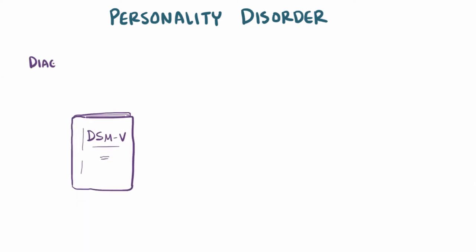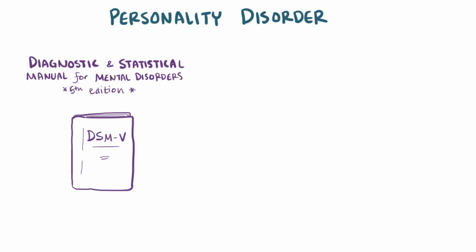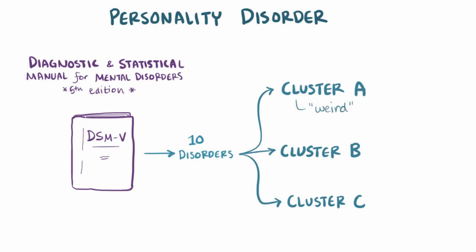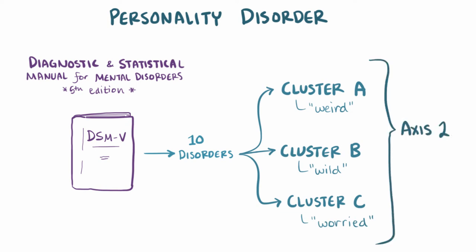The DSM-5, or the Diagnostic and Statistical Manual for Mental Disorders, 5th edition, lists 10 personality disorders that are split into three different clusters, referred to as clusters A, B, and C. These names aren't exactly descriptive, so to help keep them organized, you can remember them as weird for cluster A, wild for cluster B, and worried for cluster C. These used to be under the category axis 2, but that way of organizing isn't really used anymore.